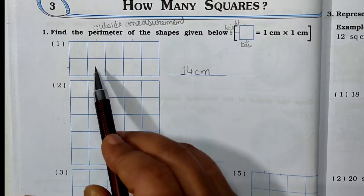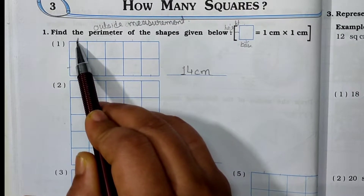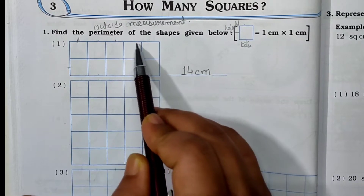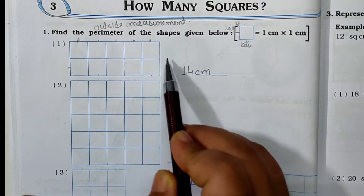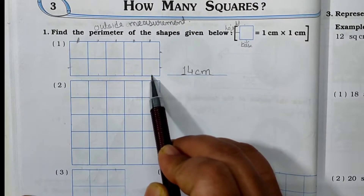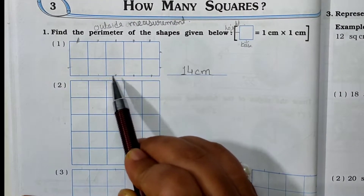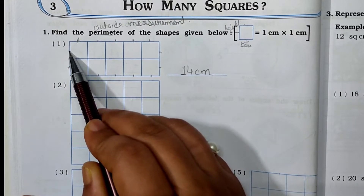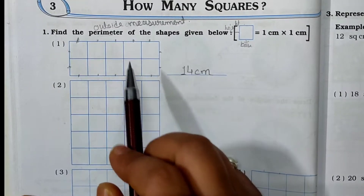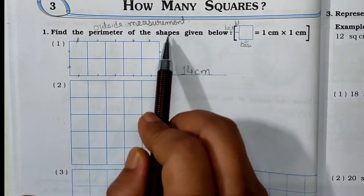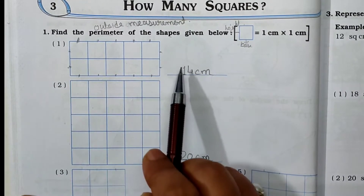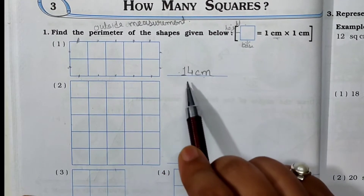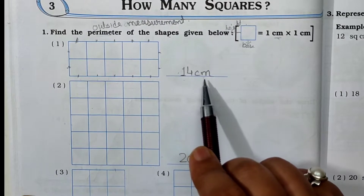So let's start counting the outside: 1, 2, 3, 4, 5, 6, 7, 8, 9, 10, 11, 12, 13, and 14. The outside measurement — perimeter of this shape — is equal to 14 centimeters. It's given in centimeters, so write down here 14 centimeters.